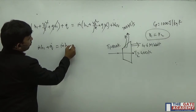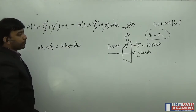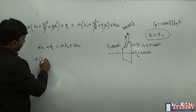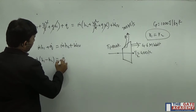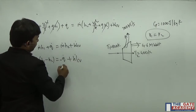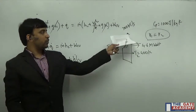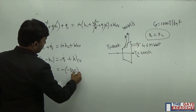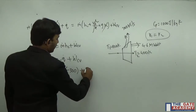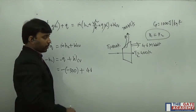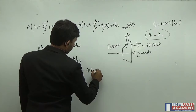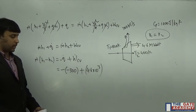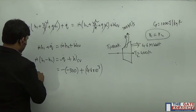Since velocity and elevation are the same at inlet and exit, the equation simplifies to: m_dot·(h1 − h2) = Q_dot + W_dot. Heat is lost from the control volume, so Q_dot is −300 kJ/s, and work output is 4.6 × 10³ kJ/s.